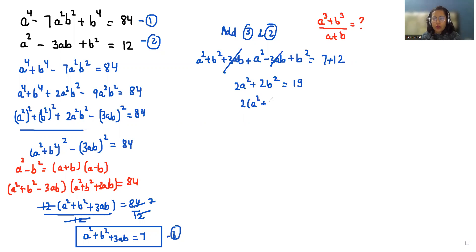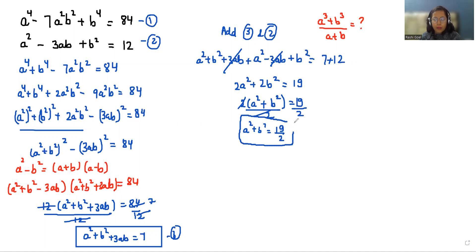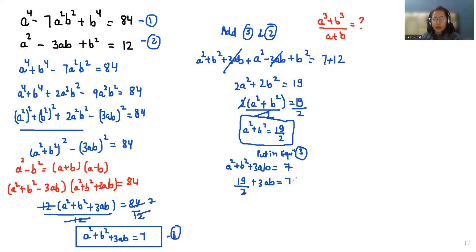Taking 2 as common and dividing both sides by 2, the value of a squared plus b squared equals 19 by 2. Now putting this value into equation number 3: 19 by 2 plus 3ab equals 7, so 3ab equals 7 minus 19 by 2, which gives 3ab equals minus 5 by 6.